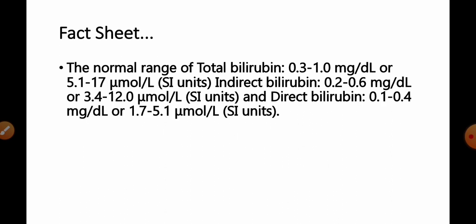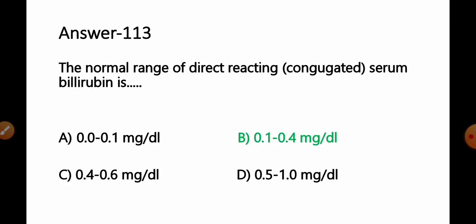Normal range for total bilirubin is 0.3 to 1 mg per deciliter. For indirect bilirubin or unconjugated bilirubin, it is 0.2 to 0.6 mg per deciliter. And for direct or conjugated bilirubin, it is 0.1 to 0.4 mg per deciliter. So we can say from the given information, it is option B. 0.1 to 0.4 mg per deciliter will be the correct answer or normal range for the direct bilirubin.